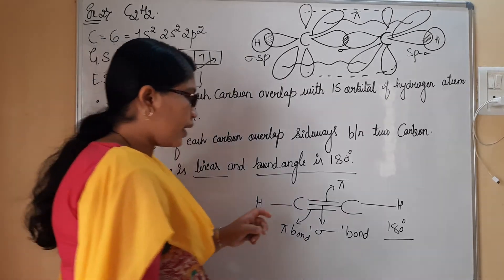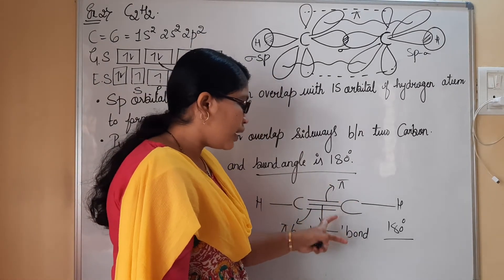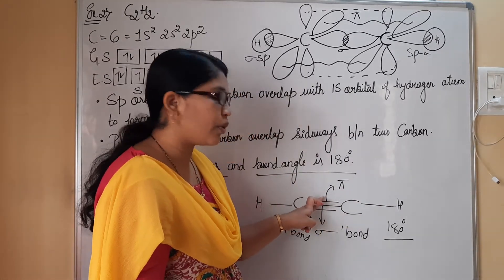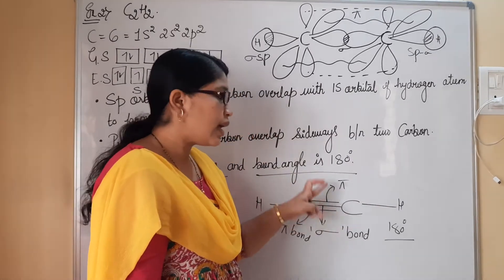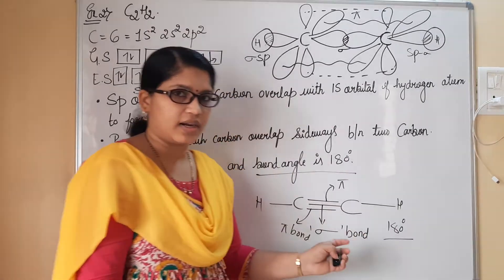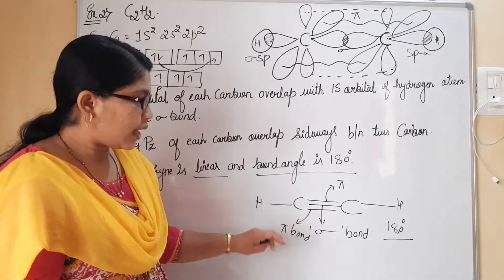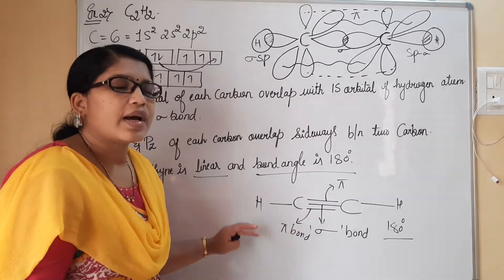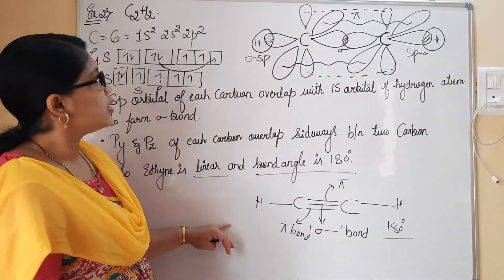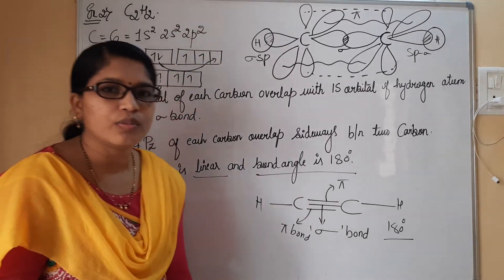In total, considering this molecule, it has two pi bonds — the first pi bond here and the second pi bond here — and three sigma bonds: one between the two carbon atoms and one each between the hydrogen atoms and each carbon. This completes the hybridization of the ethane molecule, which is SP hybridization.